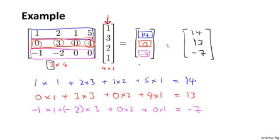As promised, the result here is a 3 by 1 matrix. That's how you multiply a matrix and a vector. If you're not quite sure where all these numbers came from, feel free to pause the video and take a slow careful look at this calculation to make sure you understand the steps that gave us 14, 13, and negative 7.